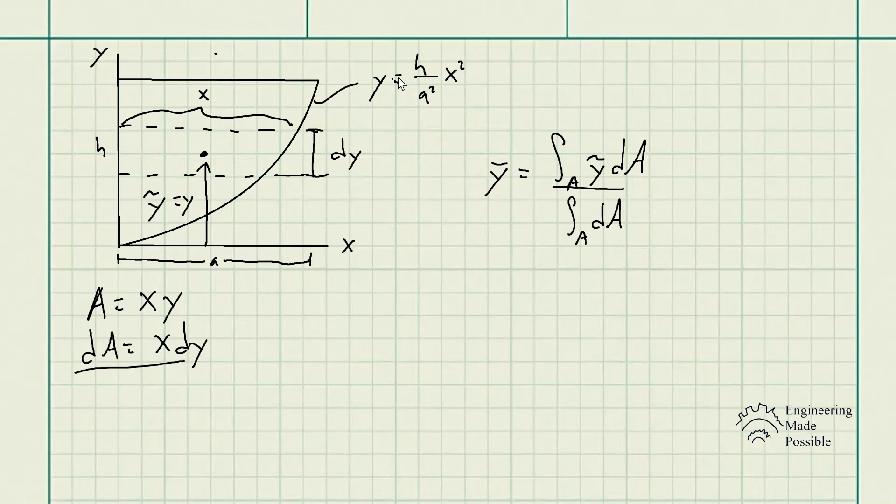And since we're given the equation y is equal to h divided by a squared times x squared, we're actually able to solve for the x value here. So solving for the x is equal to the square root of y times a squared divided by h.